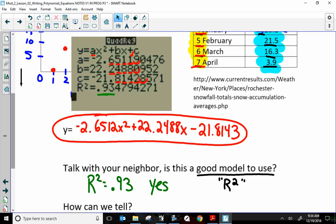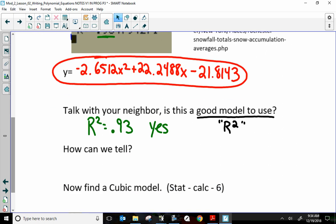So, we're going to say, yes, this is a good fit because our r squared is close to 1. It's .93. How can we tell? Well, because r squared is close to 1. Now, find a cubic model.